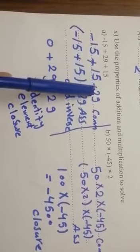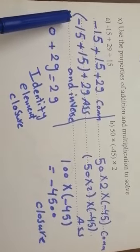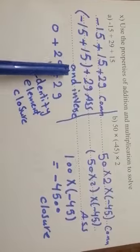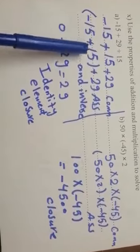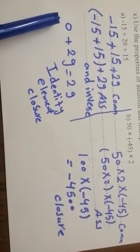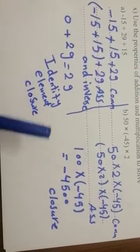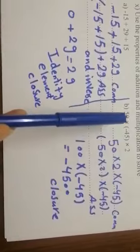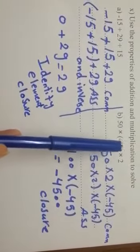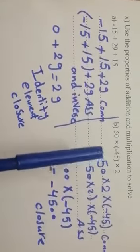Commutative: replace the places — negative 15 plus 15 plus 29. Put it in brackets (associative): negative 15 plus 15. By the inverse property, negative 15 plus 15 equals 0. So: 0 plus 29 equals 29. Identity element. Closure.